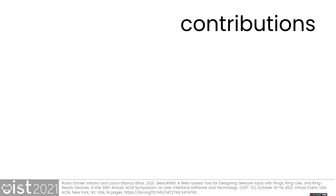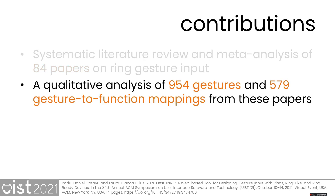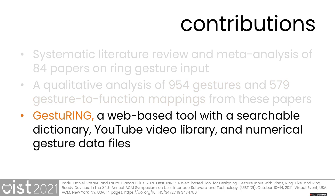Our contributions are multiple. We report results from a systematic literature review on ring gesture input that included 84 papers addressing this topic. By analyzing the results reported in those papers, we catalogued nearly 1,000 ring gestures and identified 579 mappings between ring gestures and system functions. We deliver our findings as actionable resources for practitioners. Gesturing, our web-based tool, features a searchable dictionary of ring gestures with companion YouTube videos and numerical data files to illustrate the gestures.